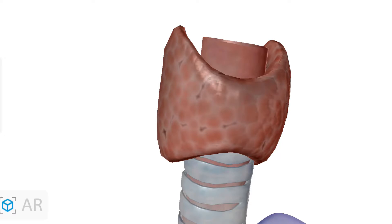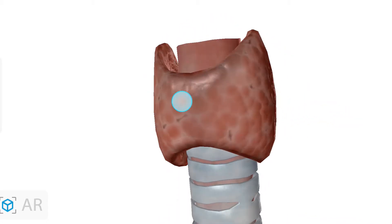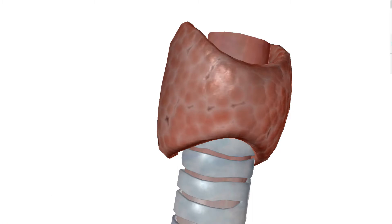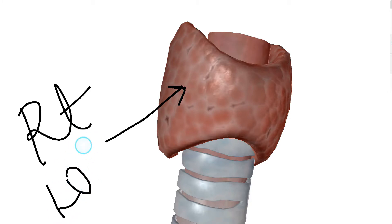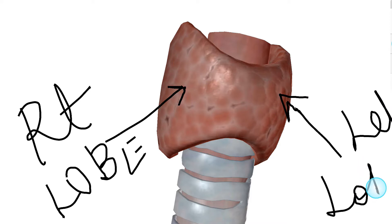This gland consists of two lobes — the right lobe and the left lobe — and these two lobes are joined by the isthmus.